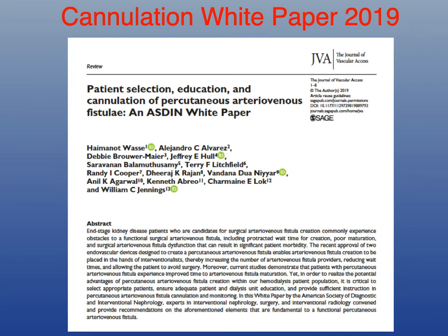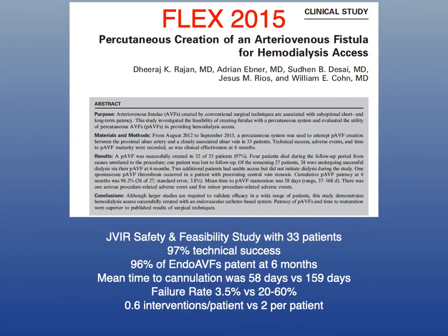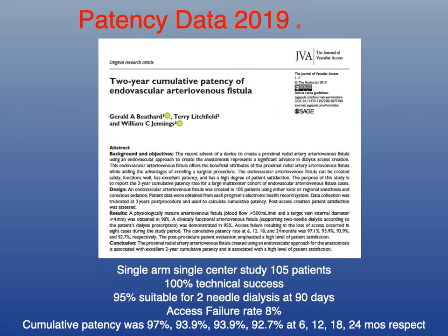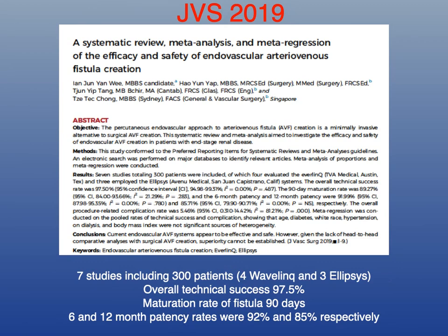There is a white paper in the Journal of Vascular Access in 2019 on how to best cannulate these patients. Numerous studies have been published including FLEX 2015, NEAT 2017, Pivotal 2018, EASE 2019, as well as a two-year cumulative patency study in 2019, covering technical success, time to maturation, time to first cannulation, failure rates, and complications. A systematic review and meta-analysis in the Journal of Vascular Surgery in 2019 included seven studies and 300 patients, with an overall technical success of 98%, a high rate of maturation, and good patency.